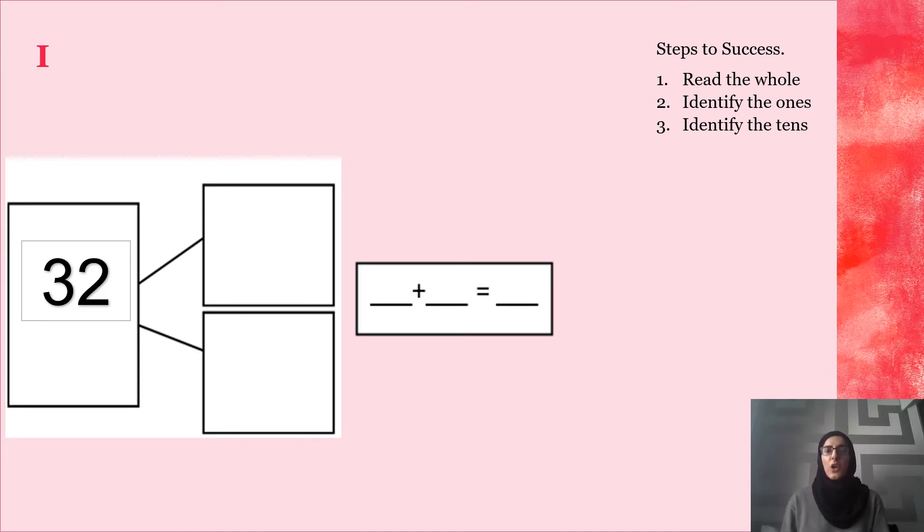Now I need to identify the ones. In order to help me I like to write tens and ones on the number. I know my ones are on the left-hand side and I know I've got my tens next to my ones. This usually helps me as well.